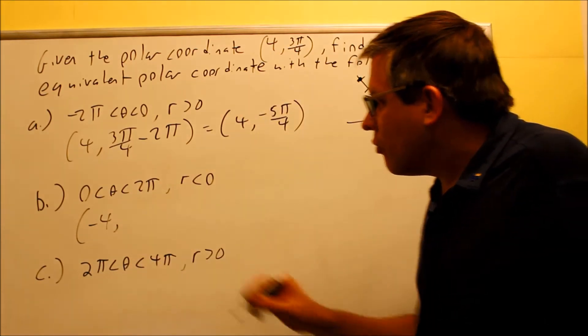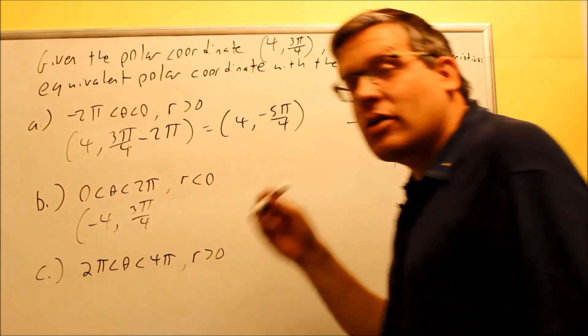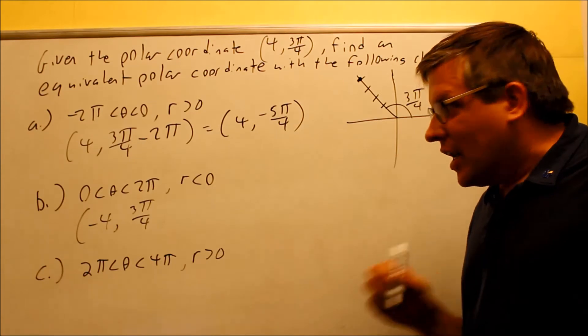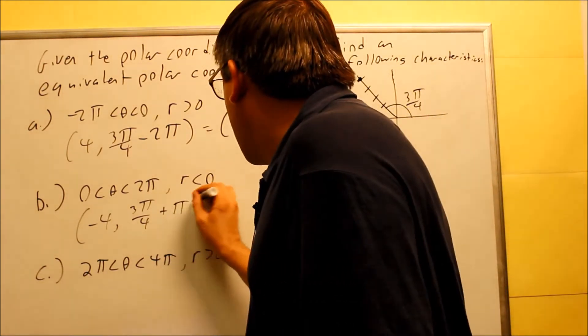We need to take our 3π/4, and it's our choice whether to add or subtract π. Now, if I subtract π, I'll get a negative angle, so I want to add π to this one.